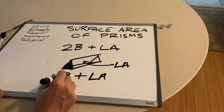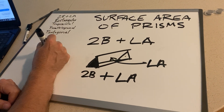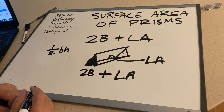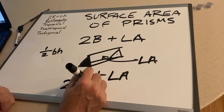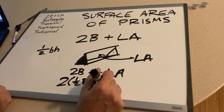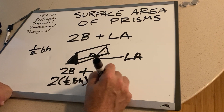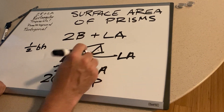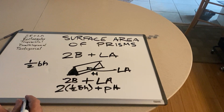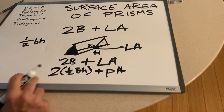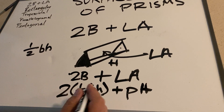And if you remember, to find the base — since this is the triangle, that's one-half base times height. So this would be two times one-half base times height, little b, plus the lateral area, which is the perimeter of the triangle times the big H height — which is the distance between the two bases. This was our way of finding the surface area of a triangular prism.